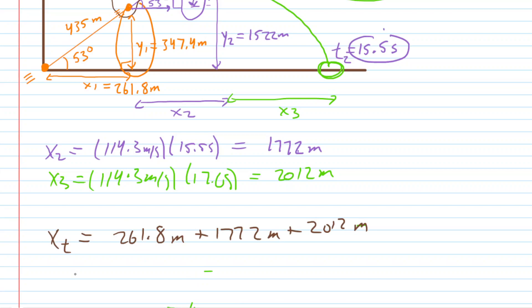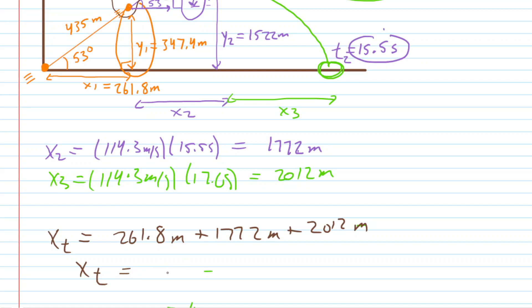Now we can get the total horizontal displacement by adding x1, x2, and x3 together. The total horizontal displacement works out to about 4,046 meters. This is the correct answer to Part C. Thanks for taking the time to watch the video. If you're interested in making a small donation, I'd greatly appreciate it.